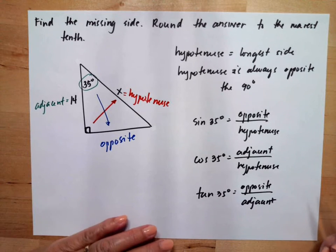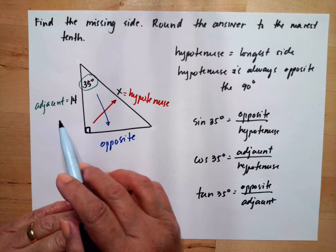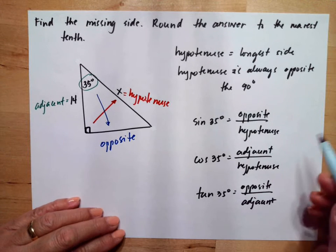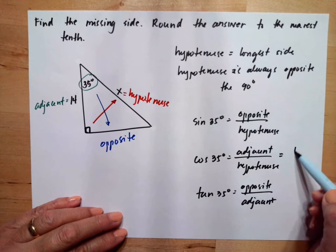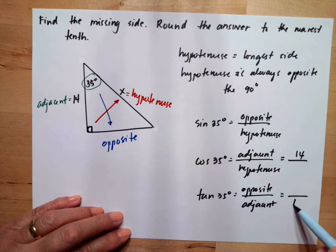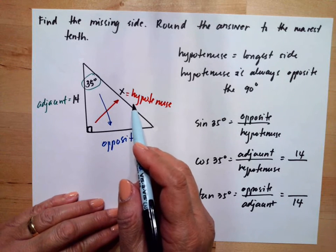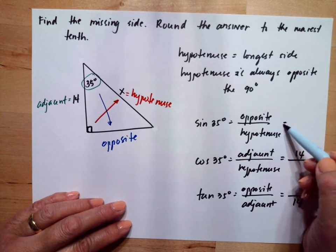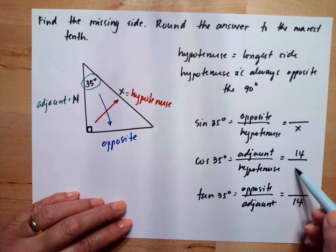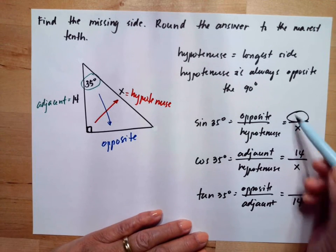We will substitute the values that we know. So the adjacent is given. Adjacent is 14. Then the hypotenuse is unknown, which is the thing that we need. So the opposite is unknown.